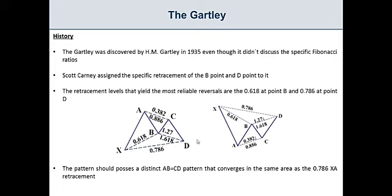This means that this area right here, which is the 78.6 retracement, has to be also a convergence of a perfect AB equals CD pattern. And the AB equals CD pattern is of course the point A, B, C and D.